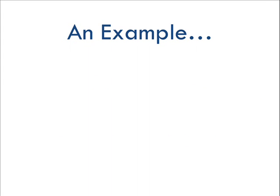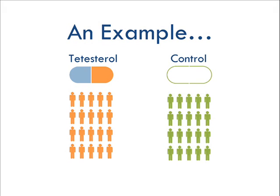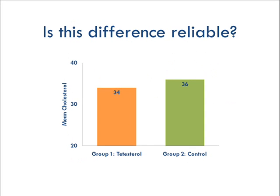Let's take an example. Researchers have developed a new drug they hope will lower cholesterol — let's call it t-testrol. They take two groups of people and give the drug to one group for a month. That's the treatment condition. The other group gets an empty pill — that's the control or placebo condition. After that month, the researchers measure cholesterol for both groups. The control group has a mean cholesterol score of 36, and the treatment group has a mean cholesterol score of 34.